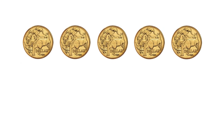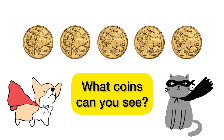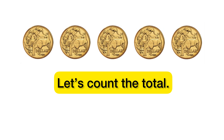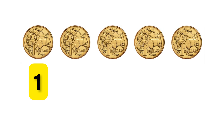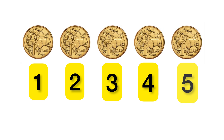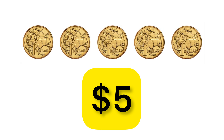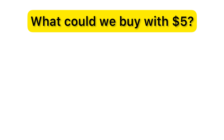We're going to start by adding dollars together first. Can you see what coins we have? That's right, one dollar coins. Let's count to see how much money we have in total. One, two, three, four, five. So all together we have five dollars. What could we buy with five dollars?